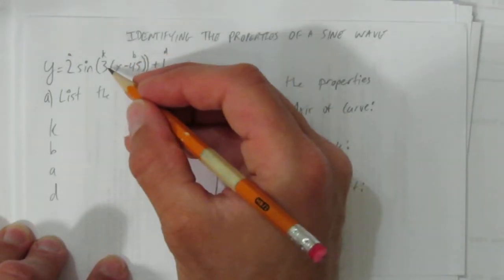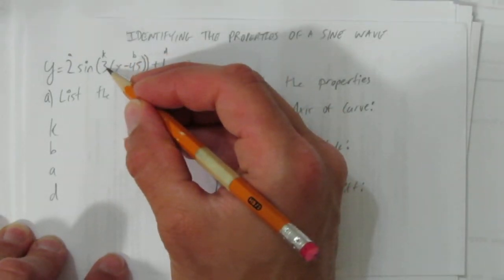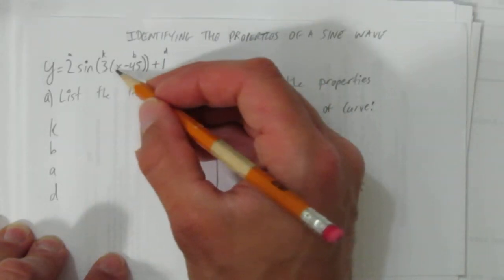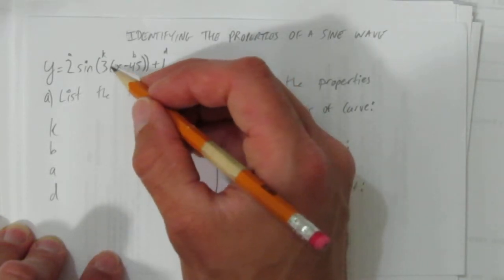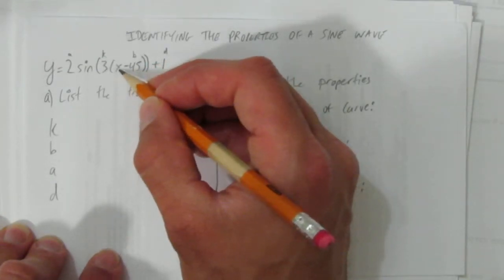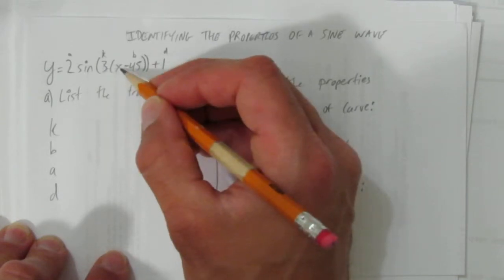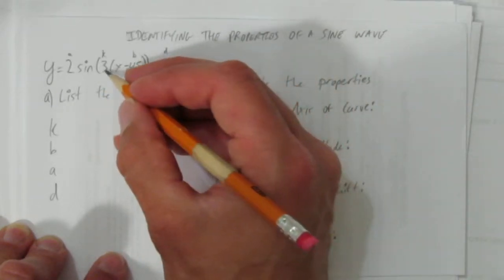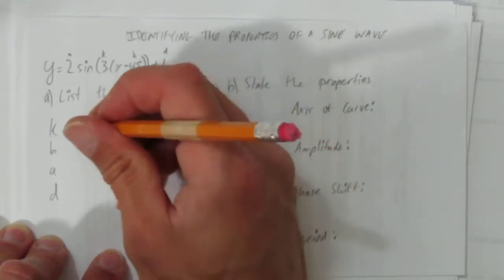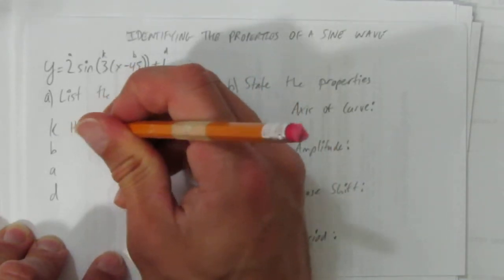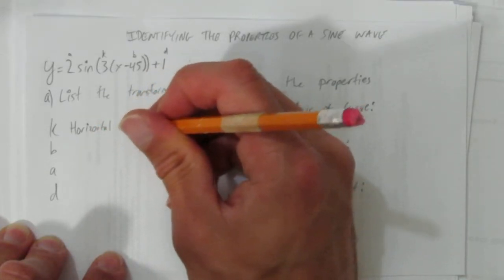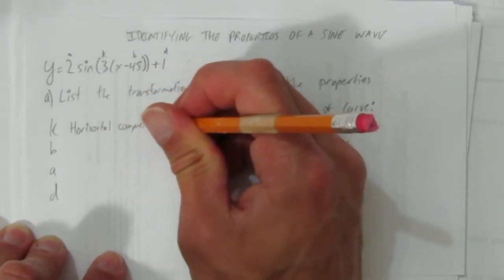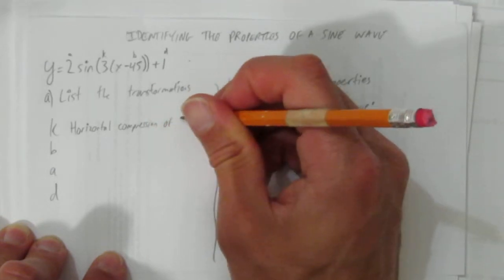Let's start with the k value. The k is 3. So the transformation is going to be based on this 3. But it's in the brackets, which means it works on x. And anything that works on x, we do the opposite. So this 3 looks like it's timesing by 3. But since it's in the brackets with x, always the opposite for x, this is going to be the opposite of times 3. It's divided by 3.